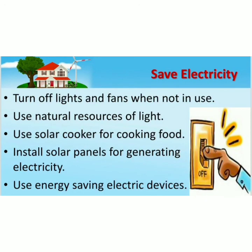How we can save electricity. Following are few ways by which we can save electricity: turn off lights and fans when not in use, use natural resources of light, use solar cooker for cooking food, install solar panels for generating electricity, and use energy saving electric devices.